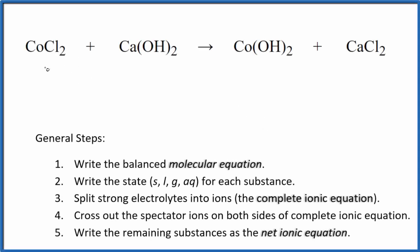Let's write the balanced net ionic equation for CoCl2 plus Ca(OH)2. This is cobalt chloride and we have calcium hydroxide.